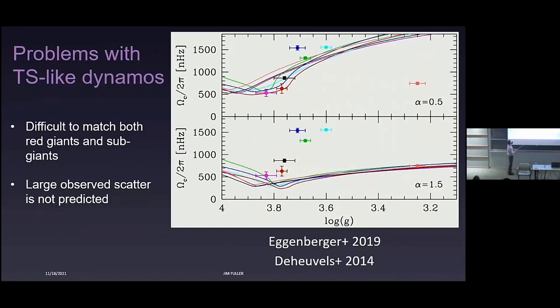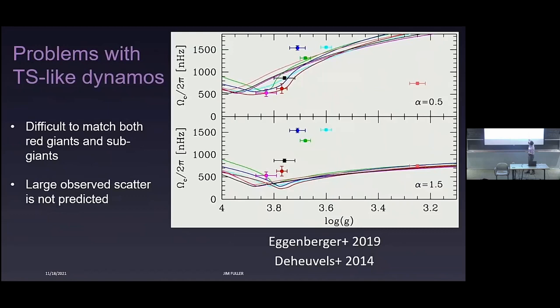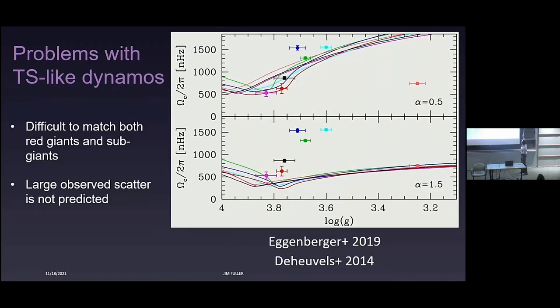There are some issues with this new Taylor-Spruit dynamo, pointed out by Eggenberger. When you look at rotation rates of asteroseismically measured subgiant stars, you can approximately match them by choosing the right alpha. But then you way over-predict the rotation rate for red giant stars. If you use a larger alpha to get more angular momentum transport to match the giants, you miss the subgiants. So it's really hard to match both populations simultaneously.